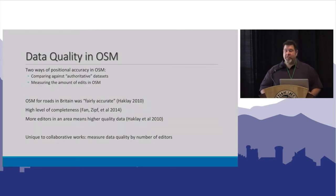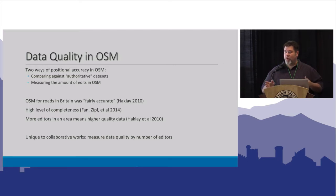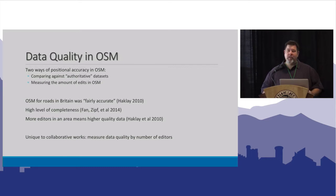When we talk about data quality in OpenStreetMap, the traditional ways we think about data quality in GIS change quite a bit. Traditional ways are either using ground truthing or comparing against authoritative data sets. A lot of research in OpenStreetMap has looked at how accurate the data is, but also the question of whether more changes in OpenStreetMap lead to more accurate data. Generally the answer is yes — the more times a feature has been changed, the more accurate that feature is in terms of positional accuracy. So a unique way to measure OSM data quality is to think about how many changes have impacted the data and how often that change set has been done.